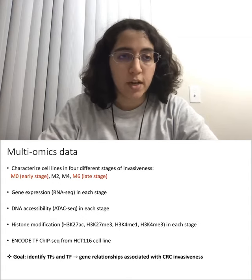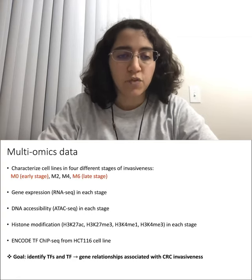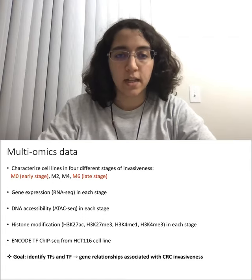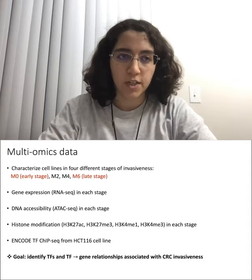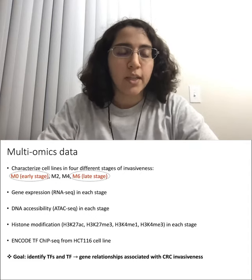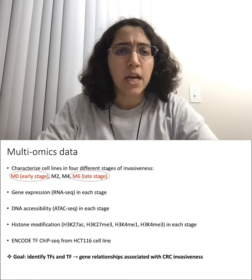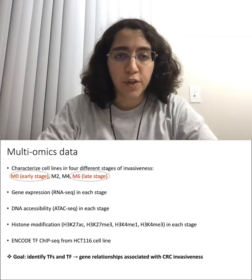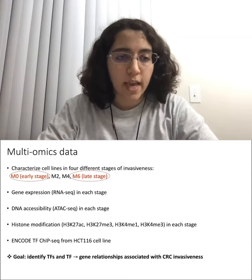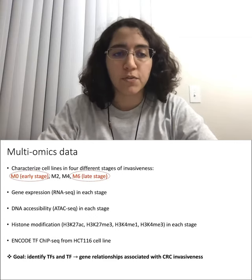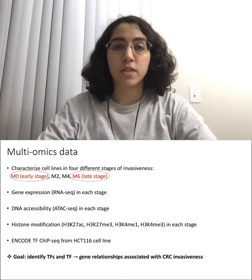In addition to the data obtained from this experiment, we also used TF ChIP-seq data from the HCT-116 cell line, which is similar to the SW4AD cell line, from the ENCODE project. We only worked with M0 and M6 cell lines, as there was a clear separation between their phenotypic and expression patterns. The goal is to use this data to identify transcription factors and TF-gene relationships associated with CRC invasiveness.